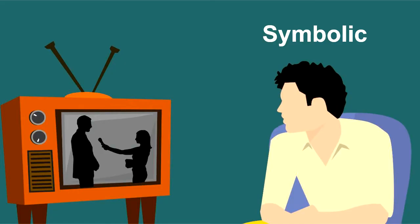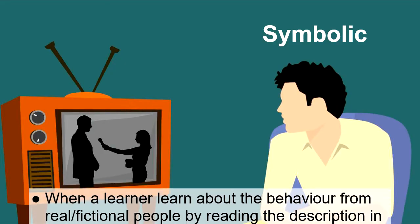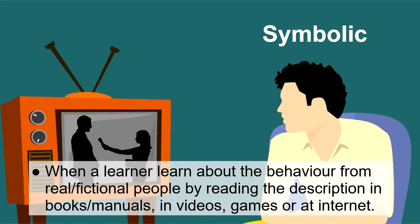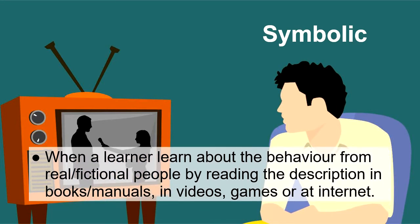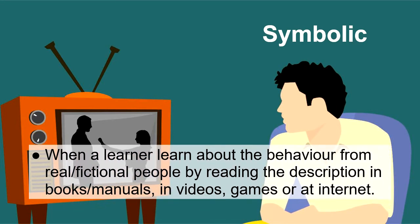The third type is symbolic modeling. Here, a learner learns about a behavior from real or fictional people — either by reading descriptions in books, manuals, videos, games, or on the internet — and then tries to imitate that behavior in a realistic situation.